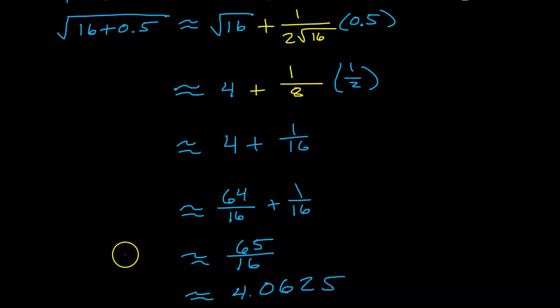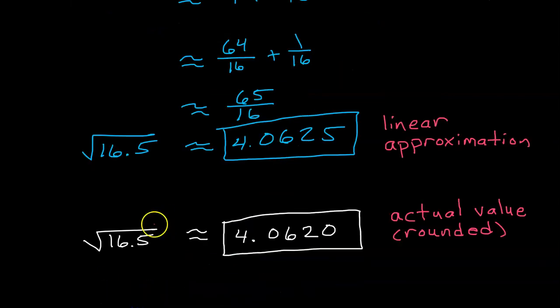So in the end, this is the approximate value of the square root of 16.5. So what we found was actually the linear approximation using 16 as the point of tangency. So just for fun, compare this to the actual value that you would get if you put this into a calculator and round it. Notice how close they are.